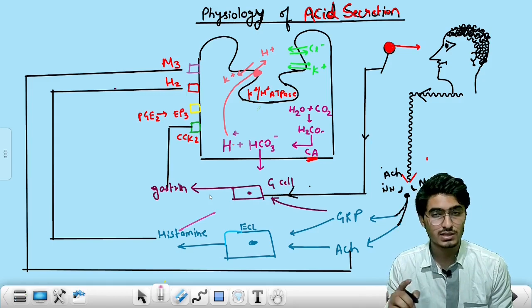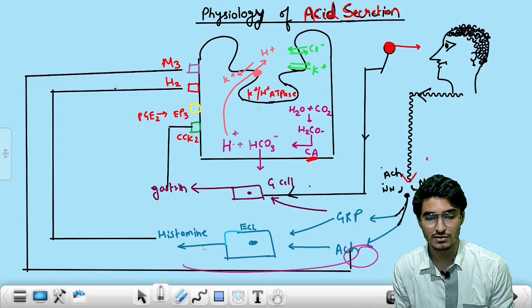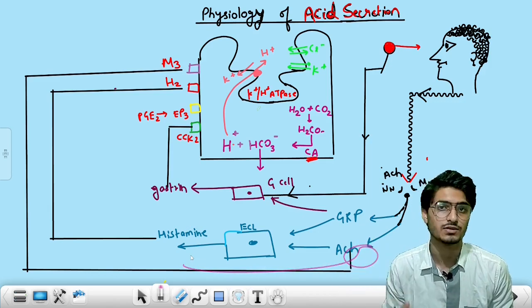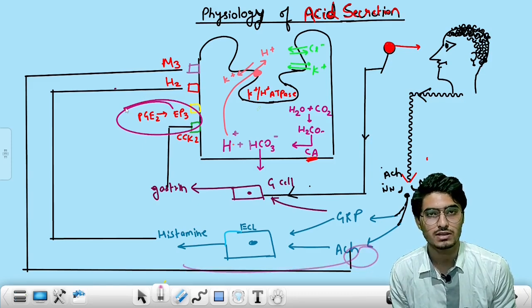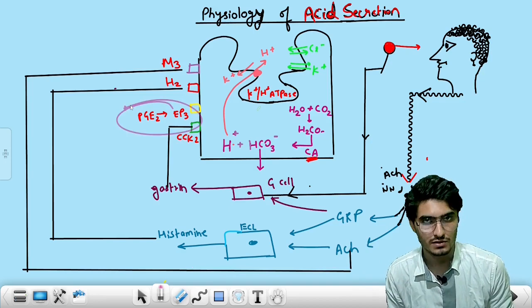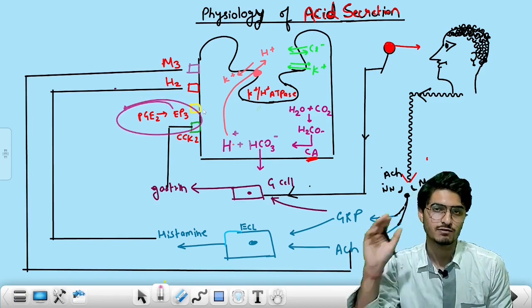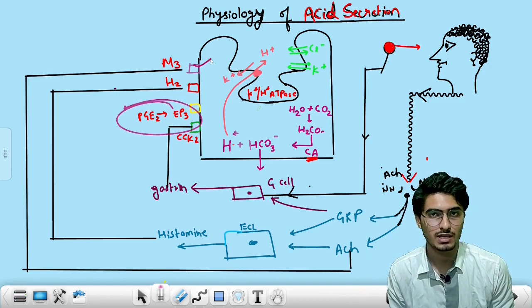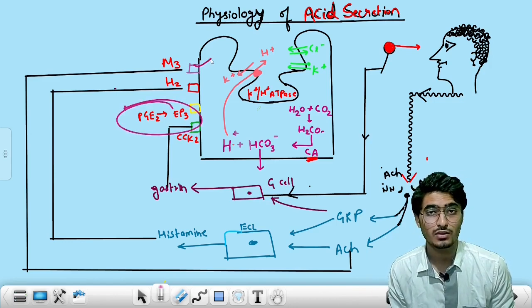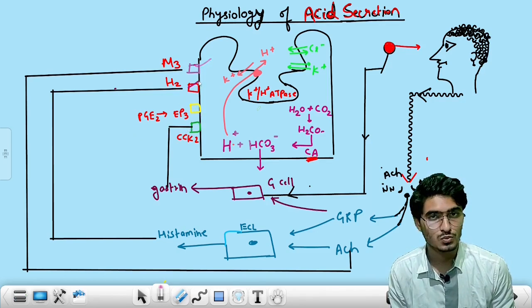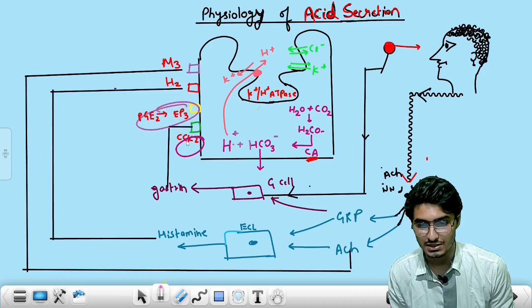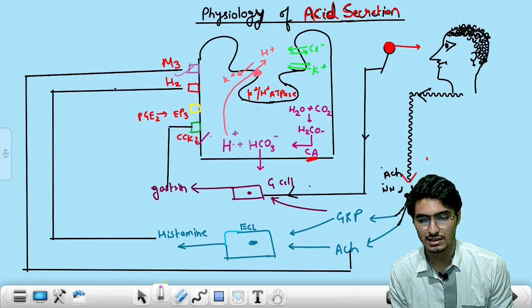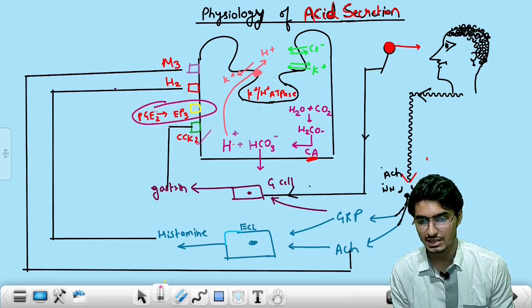Gastrin, histamine, and ACH itself — these three things augment the release of acid from the parietal cells. Only one villain opposing this is PGE2, which acts over prostanoid receptors EP3, thereby decreasing the release of acid. M3 receptors — that is the IP3-DAG receptor — increase calcium release inside the cells. H2 increases cyclic AMP. PGE2 decreases cyclic AMP concentration and also increases calcium via IP3-DAG mechanism, thus decreasing acid secretion.